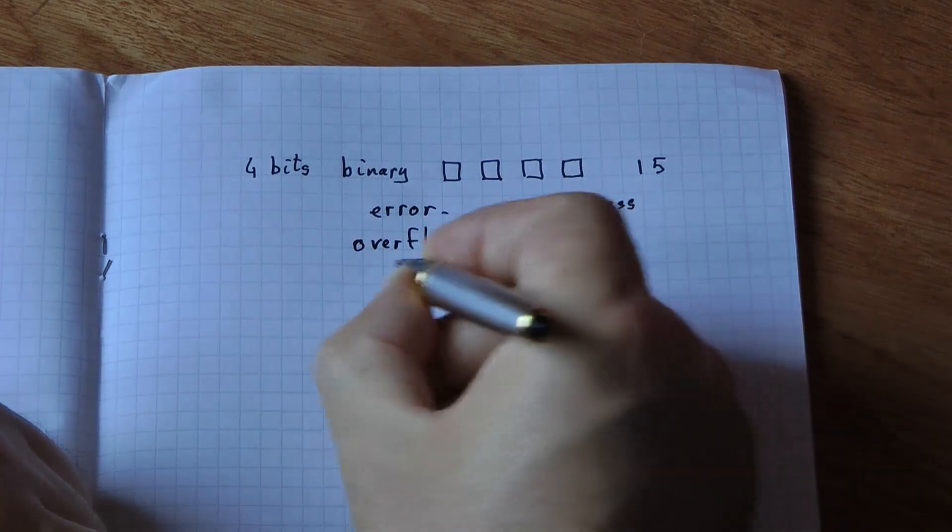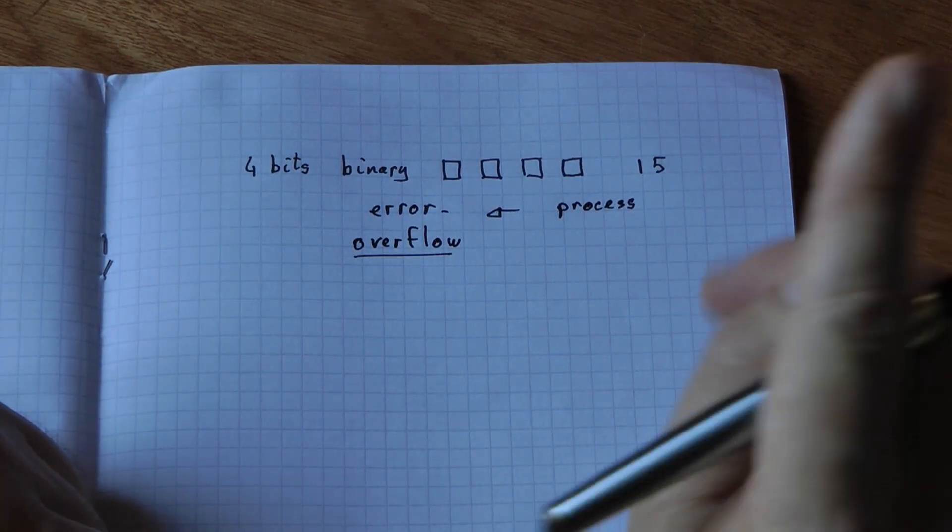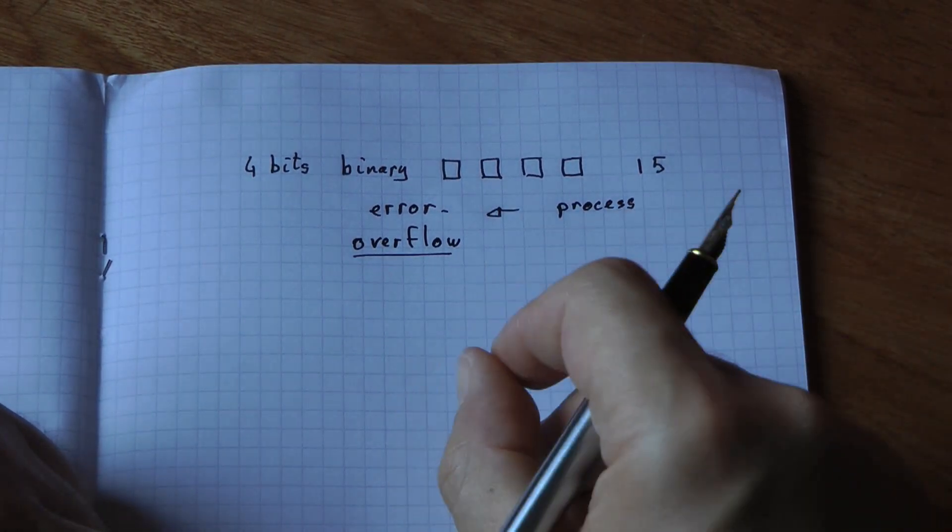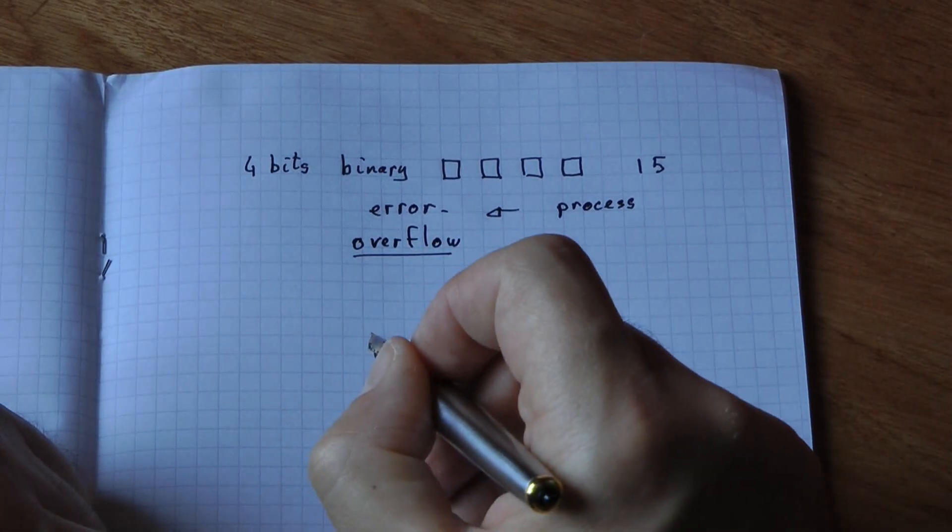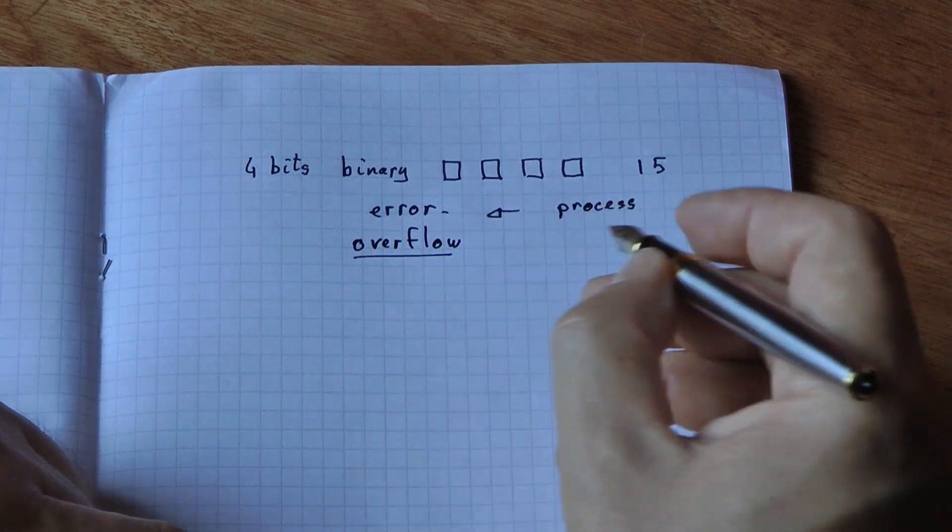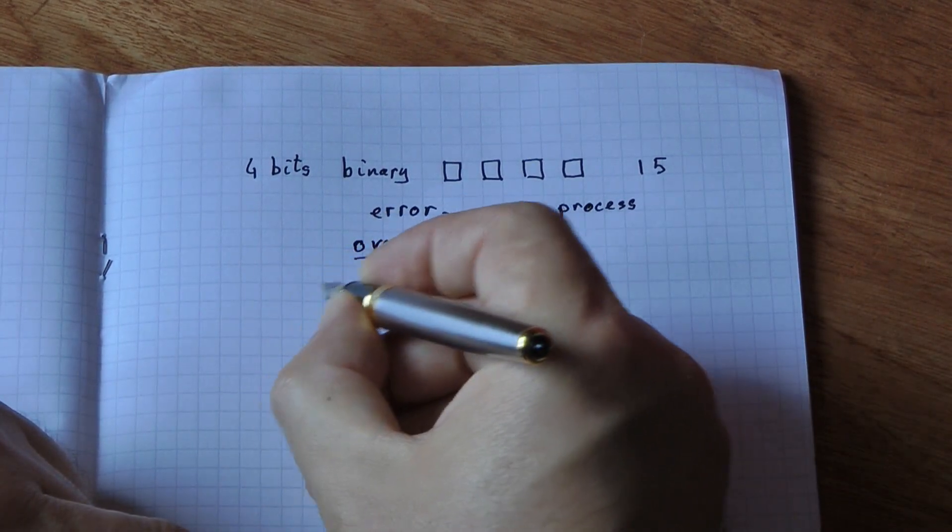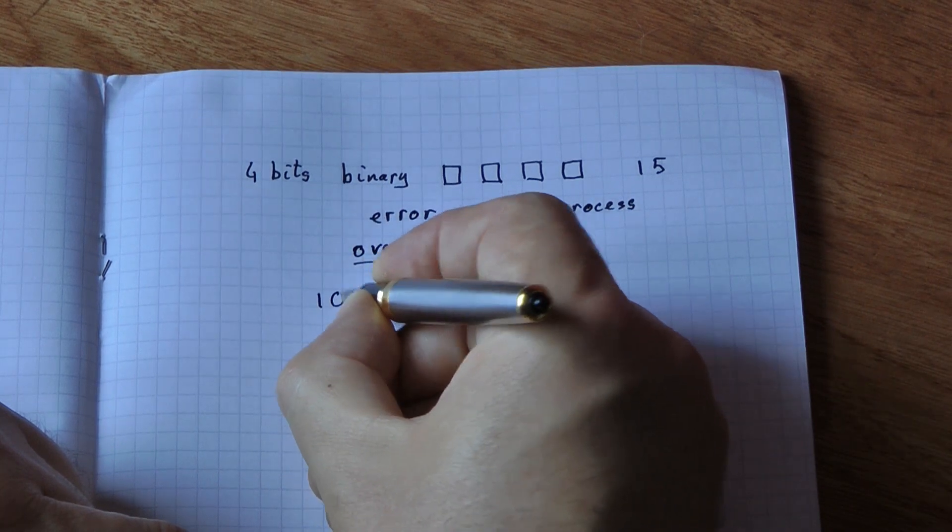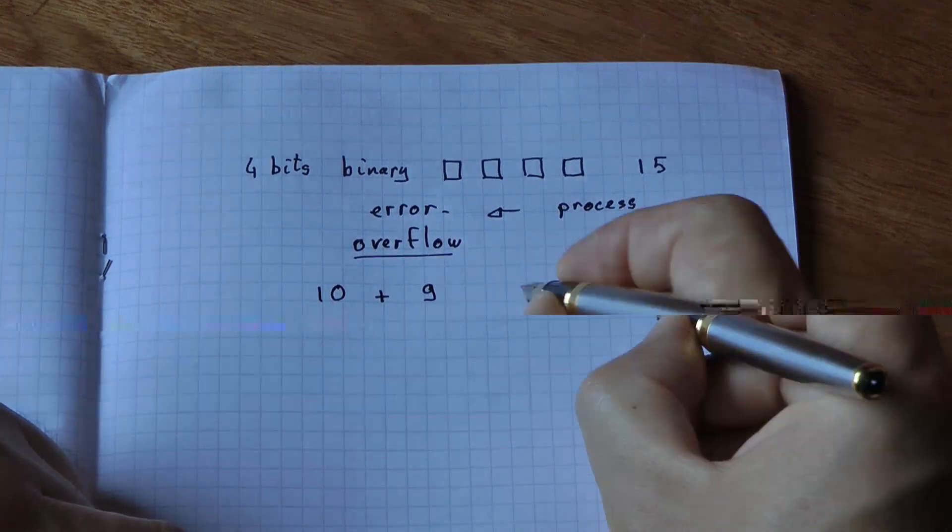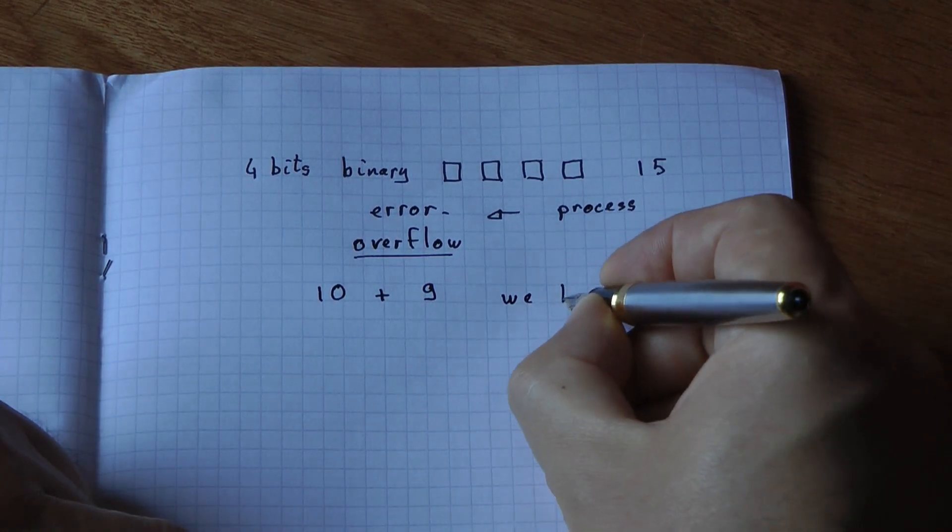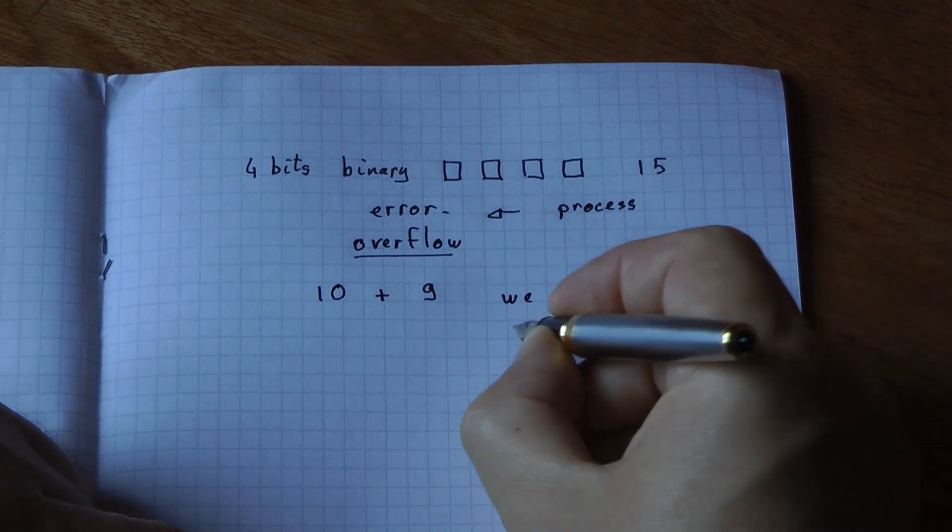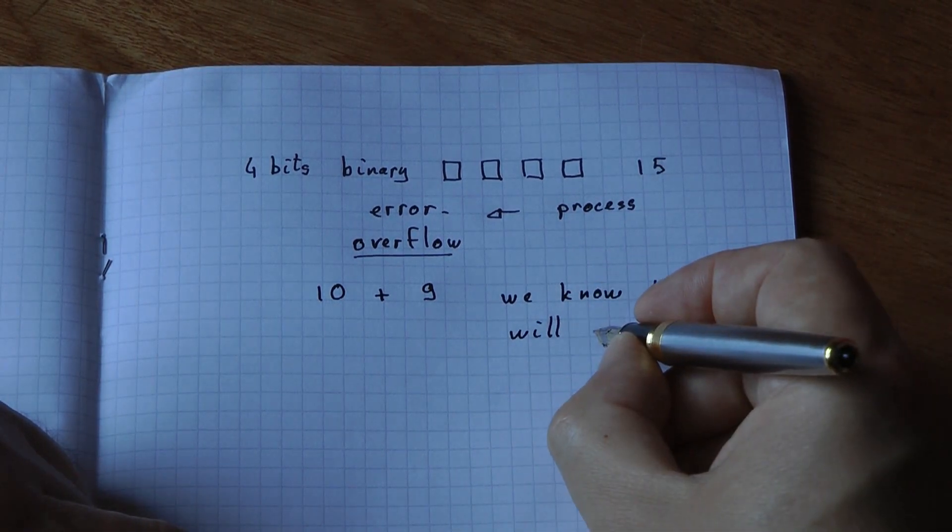Being able to recognize when overflow occurs is something you need to be able to do in your exam because there might be questions. For example, in my 4-bit binary addition, if I'm asked to calculate, let's say, 10 plus 9, right now we know there's going to be overflow.